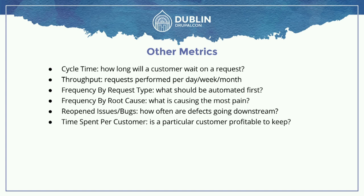Frequency by root causes — we're talking about incidents. What's causing the most pain? Maybe a particular database or component of the stack is always causing troubles. If we can see that's where the pain is coming from, we know we should start paying attention to and fixing that portion of the stack first. Reopened issues or bugs — how often are defects going downstream? Is there a process failure or an issue with a particular piece of software? And then a very interesting one: time spent per customer. Imagine you had everyone track their time and you're able to attribute requests to a particular customer. You can then calculate the operational overhead of having that customer and whether or not they're profitable.